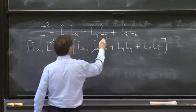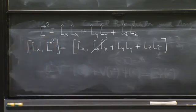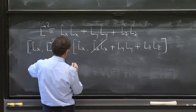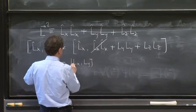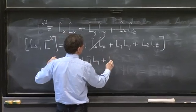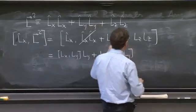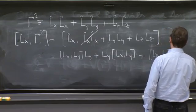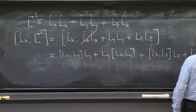Now, Lx and Lx commute. So I don't have to bother with this thing. That's 0. That's 0. But the other ones don't commute. So let's do the distributive law. So this would be an Lx, Ly, Ly plus Ly Lx, Ly. This is from the first plus Lx, Lz, Lz plus Lz, Lx, Lz.